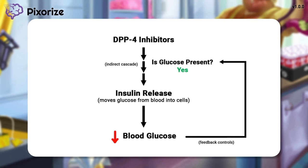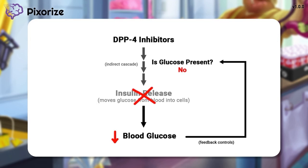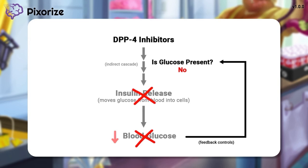When there's not enough glucose present, DPP-4 inhibitors will not cause insulin release, and there will not be a further decrease in blood glucose levels. Feedback controls allow DPP-4 inhibitors to shut off their own action to prevent blood glucose levels from falling too low.